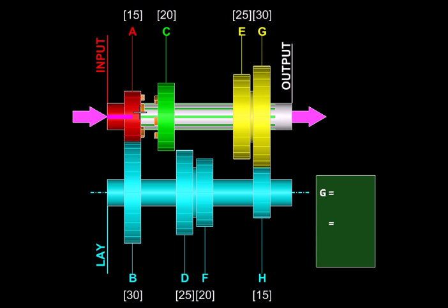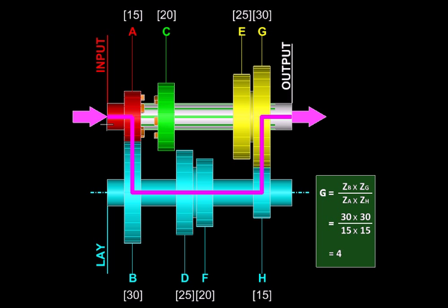The power flows from the engine to the input shaft and then it takes a detour via this gear pair. It flows to the lay shaft and through the lay shaft and this gear engagement it comes back to the output shaft.